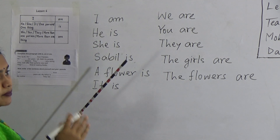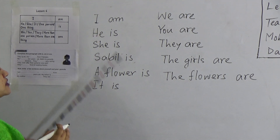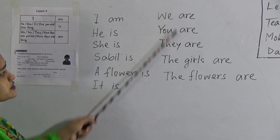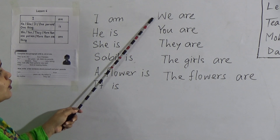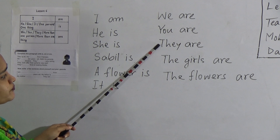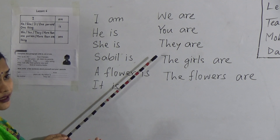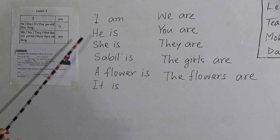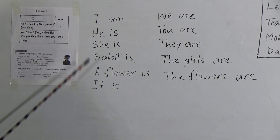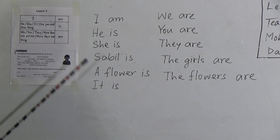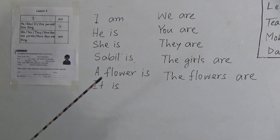So what do you understand from this chart? We use 'am' after 'I'. When we are talking about only one person or one thing, we use 'is'. When we are talking about more than one person or one thing, we use 'are'. We also use 'are' after 'we', 'you', and 'they', and after plural subjects. And we use 'is' after 'he', 'she', or 'it'.